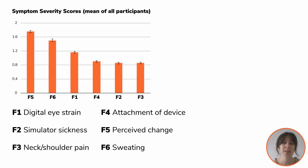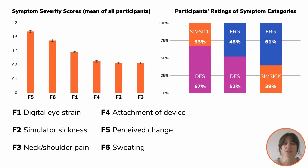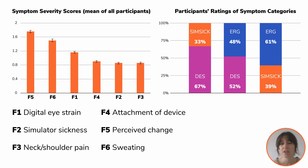When comparing the mean symptom severity scores of these factors, we found that the two most severe factors were perceived change in sweating, followed by digital eye strain and symptoms caused by the attachment of the device. Simulator sickness and neck and shoulder pain were the least severe symptoms. We also asked participants to rate the relevance of each symptom category to general discomfort by directly comparing each two categories, and found that digital eye strain and ergonomic symptoms were more relevant to users than simulator sickness.